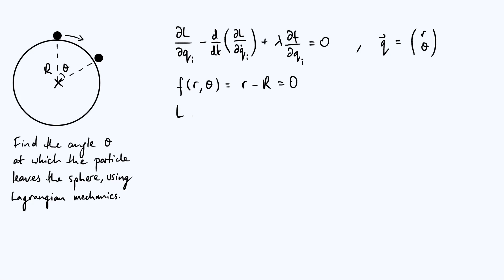Now let's construct our Lagrangian. The Lagrangian is always T minus V, where T is kinetic energy and V is potential energy. The kinetic energy is the standard expression in polar coordinates: half m r_dot squared for radial motion, plus half m r squared theta_dot squared for tangential motion, since r times theta_dot is just the tangential velocity. The only potential energy in this problem is gravitational: mgh, where h is the height of the particle above some reference point. I'll take the center of the sphere as the zero potential energy reference.